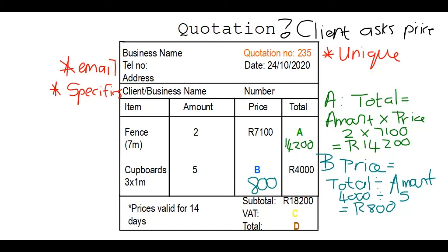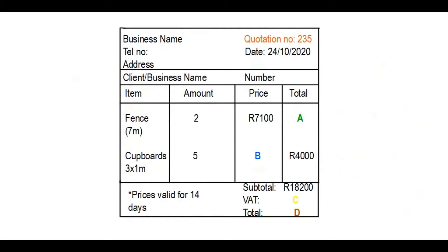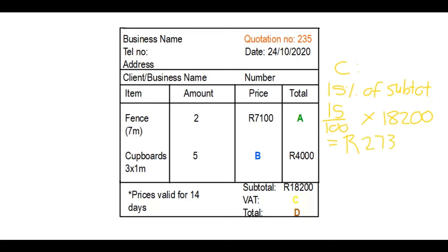On a fresh page, we calculate C, the VAT, which is fifteen percent of the subtotal. So I write fifteen over one hundred multiplied by eighteen thousand two hundred. The answer is two thousand seven hundred and thirty rand. I'll write that in as C: two thousand seven hundred and thirty.